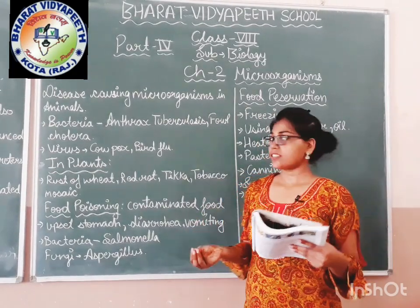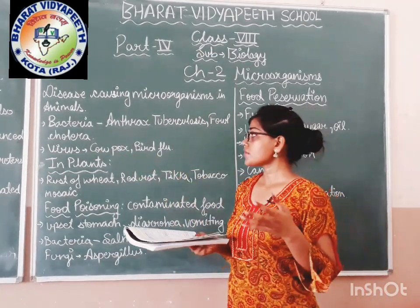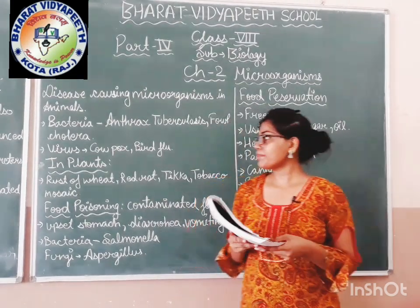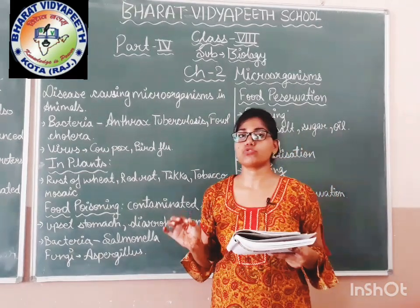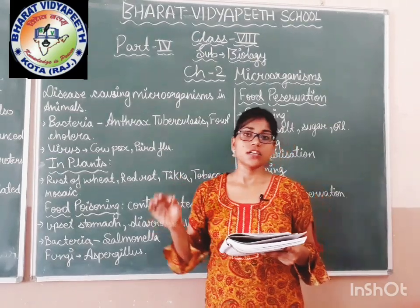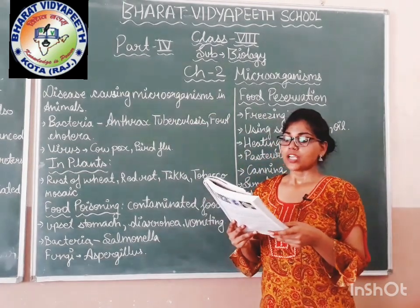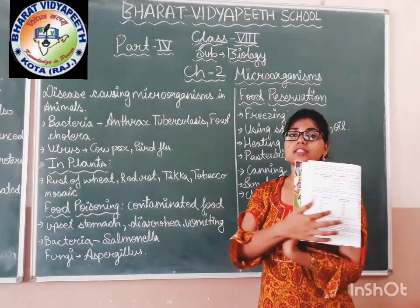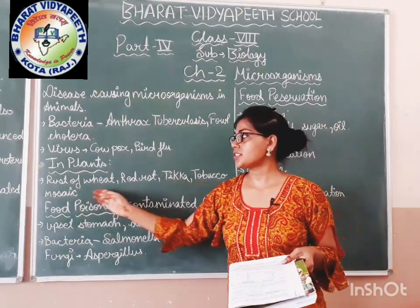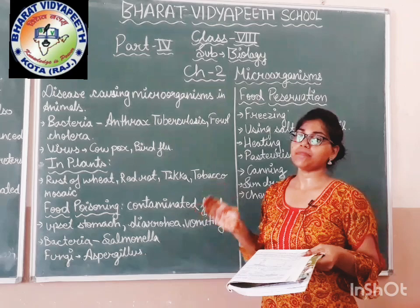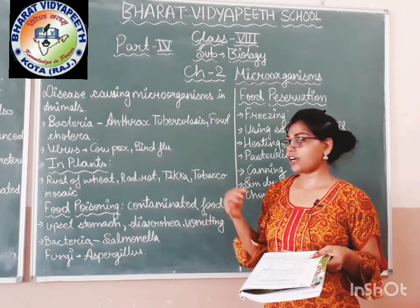Viruses such as cowpox and bird flu are different types of viruses which cause disease in animals. In plants, there are also different types of fungi, bacteria, viruses, and protozoa which cause disease in different crops. A table is given on page number 29 about plant organisms which cause diseases — like rust of wheat, red rot, tikka, and tobacco mosaic disease — caused by microorganisms such as bacteria and fungi.